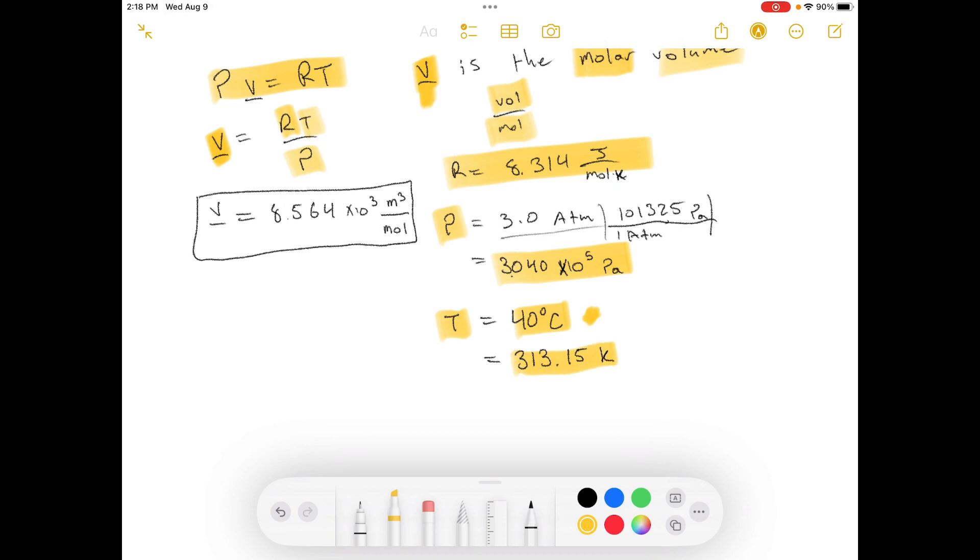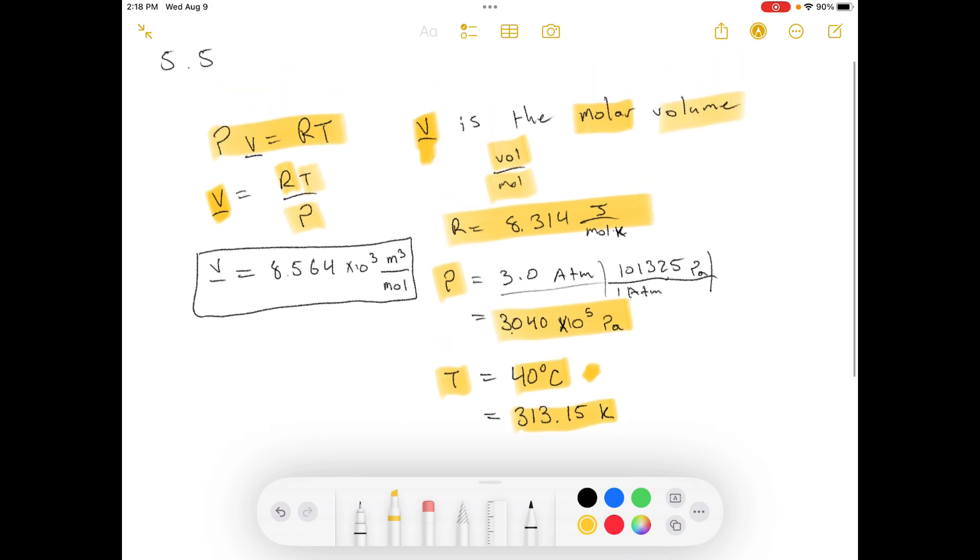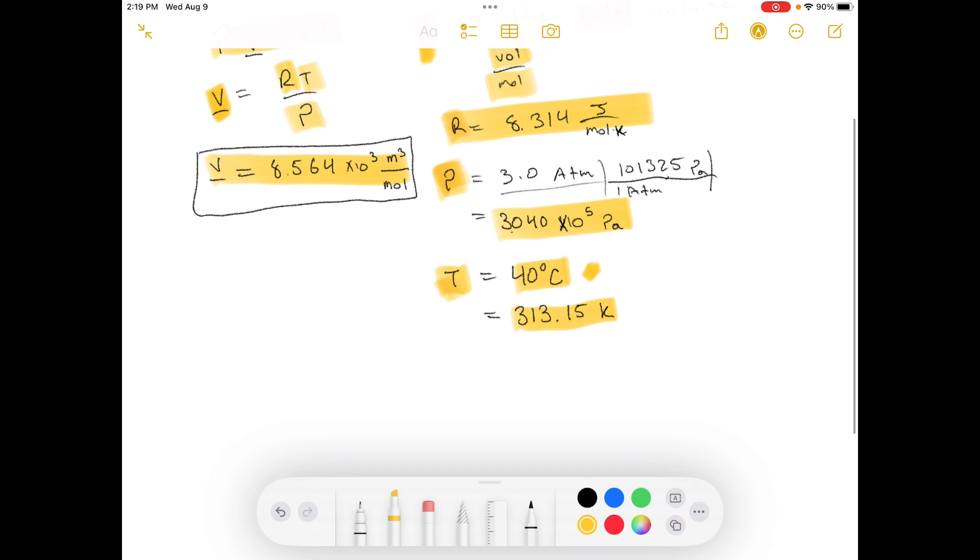So we have to convert that into Kelvin. We can convert that into Kelvin. Now we have R, P, and T. This is the molar volume of the air.